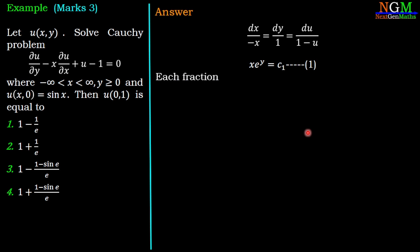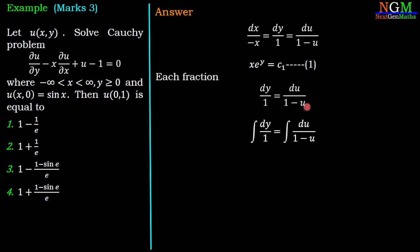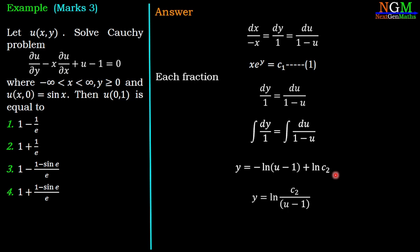Similarly, taking the last two terms of this ratio, we have dy/1 = du/(1 − u). Integrating both sides: ∫dy = ∫du/(1 − u), giving y = −ln|u − 1| + ln c2. Simplifying, y = ln(c2/(u − 1)), and therefore e^y·(u − 1) = c2. That is the second equation.